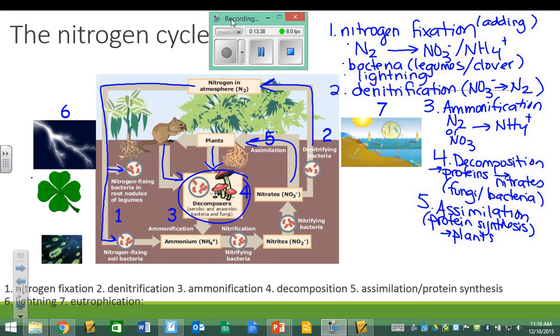Now, I already mentioned lightning because it's one of the subcategories of nitrogen fixation. So I'll jump right ahead to the last thing, eutrophication. Now, eutrophication is not a step of the cycle. Eutrophication is an example of what can go wrong in the cycle.